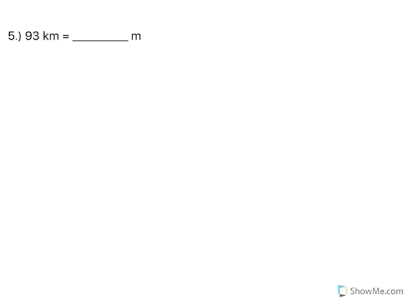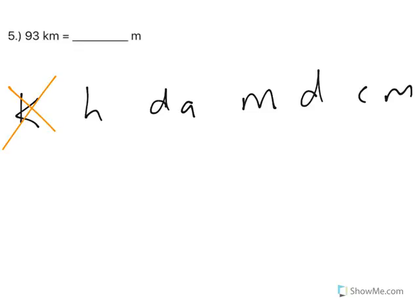Kilometers to meters. So I'm going K, H, D, A. We're in meters, D, C, M. I'm starting in kilometers, moving to meters. One, two, three. So decimal goes right three places.